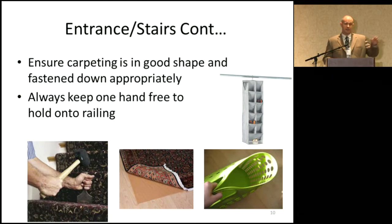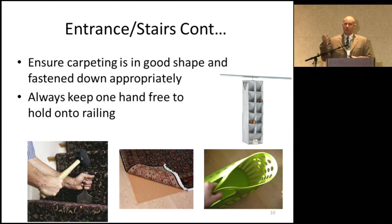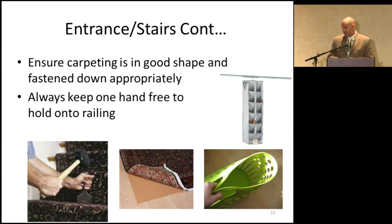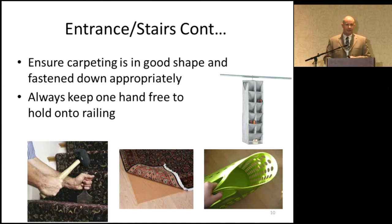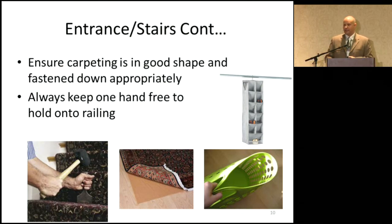When on stairs, always have one hand free to hold the railing. It might be a good idea to have railings on both sides — if your left side is stronger, you'd be fine going up with a railing on the left, but coming down you'd face the other direction and need to use your weaker hand. If you have space, put railings on both sides. When doing laundry, rather than carrying a basket in two hands on the stairs, consider a foldable one you can carry in one hand while holding the railing.